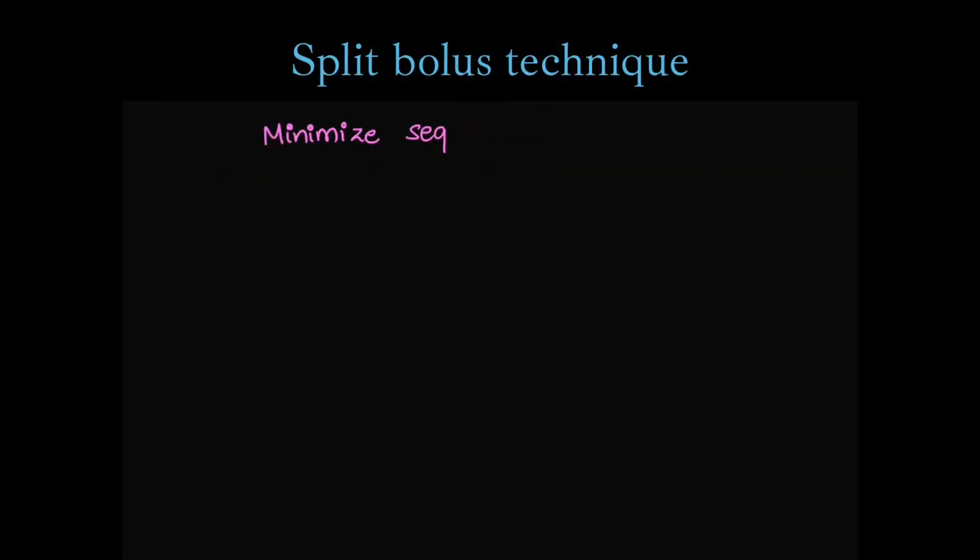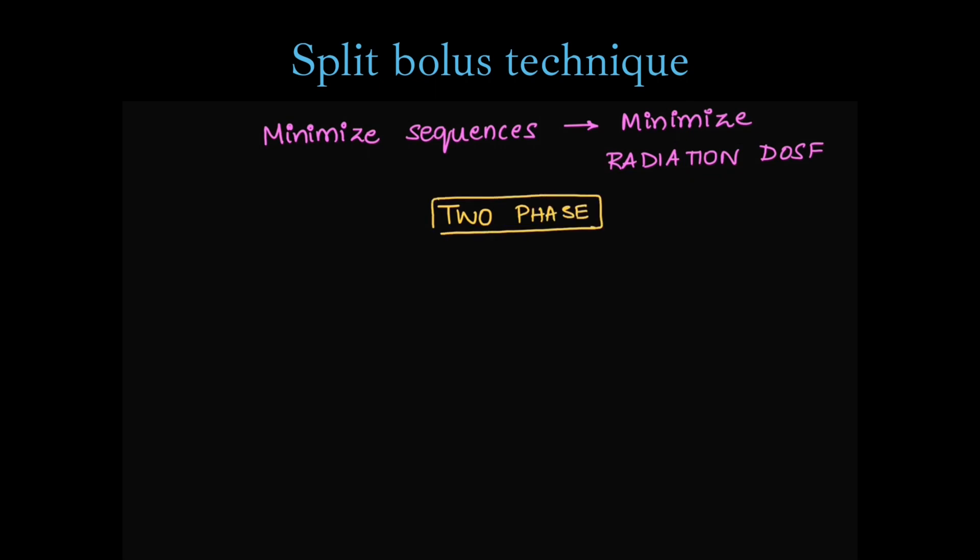Done with CT urography. Now, we will come to split bolus technique of multiphasic CT. This is used to minimize the sequences. Hence, it will minimize the radiation dose to the patients. We can take it in two phases. Split bolus technique, we take in two phases. First, we take a non-contrast. Next, we take a nephropylographic sequence, which combines nephrographic phase and also the excretory or the delayed phase.